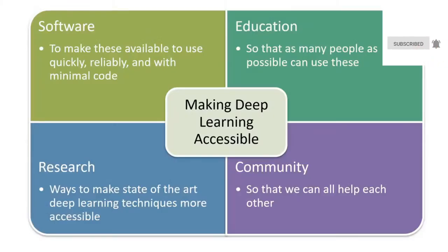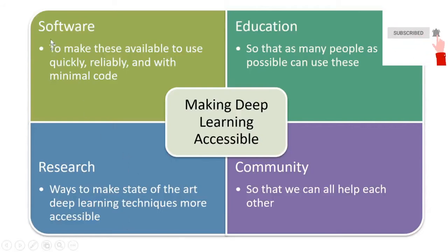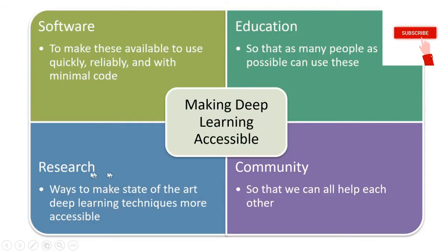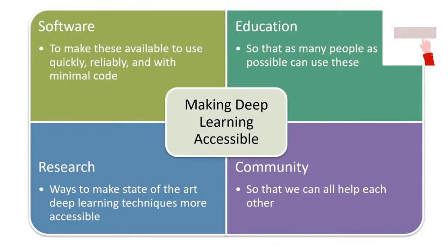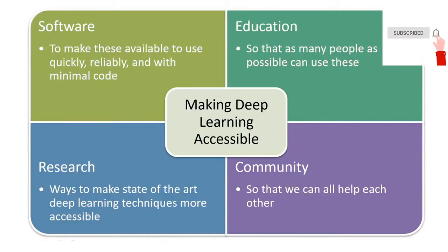Through fast.ai we are trying to help people use deep learning to do useful things — through creating software to make deep learning easier to use at a very high level, through education such as what you're watching now, through research figuring out how to make deep learning easier to use, and by helping to build a community mainly through the forums so that practitioners can find each other and work together.